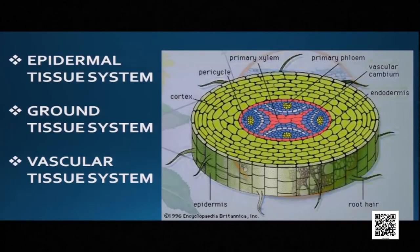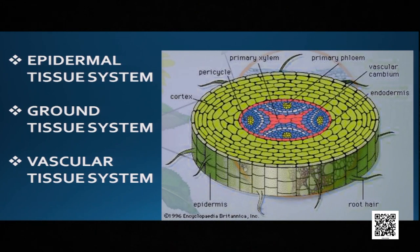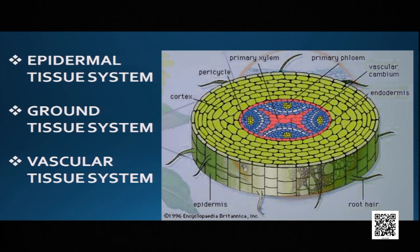Tissues combine together to form the tissue system. In plants, tissue systems are of three types: one is the epidermal tissue system, the second is the ground tissue system, and the third is the vascular tissue system. We will discuss the epidermal tissue system — what parts come under it and what they do.